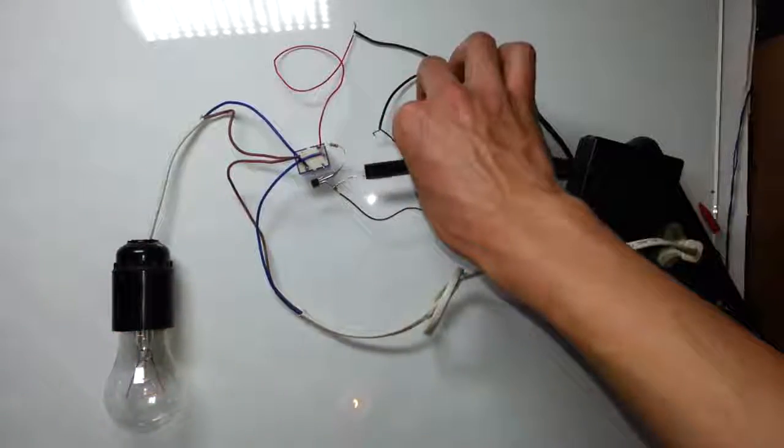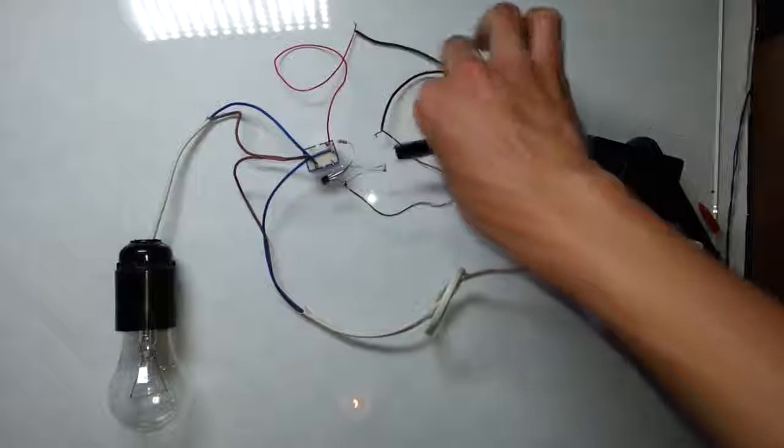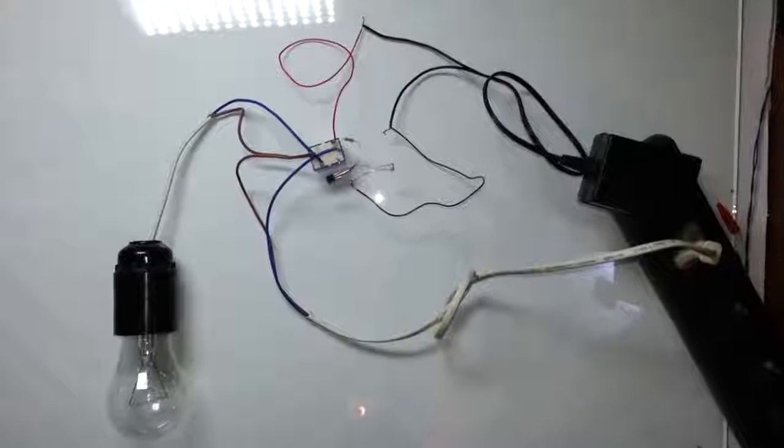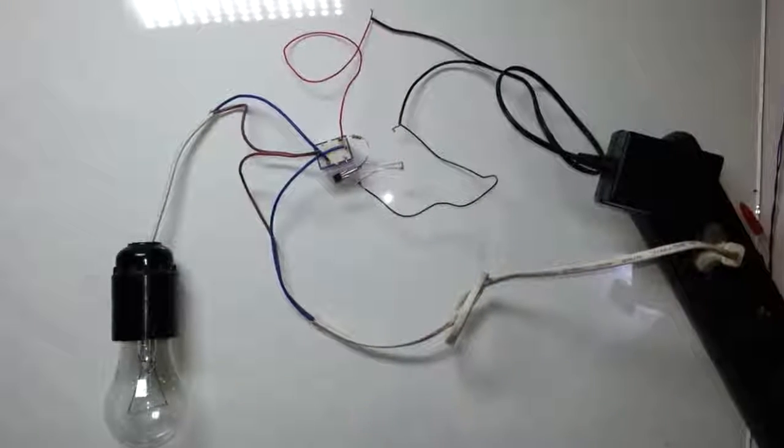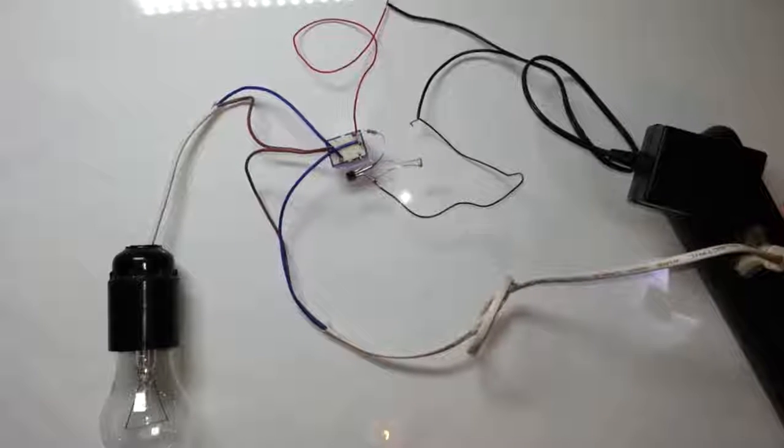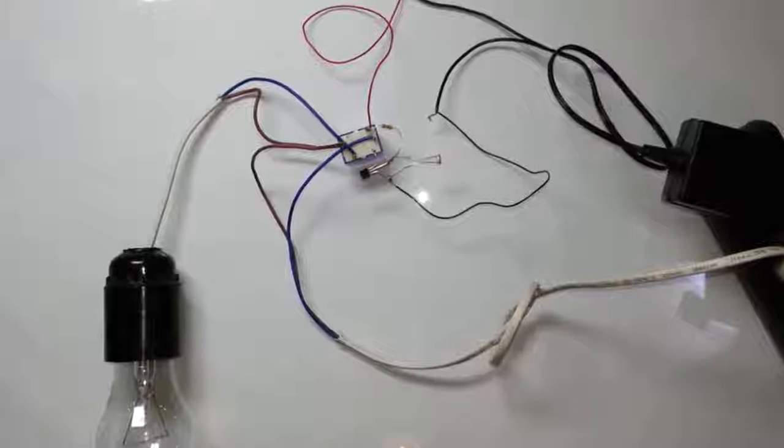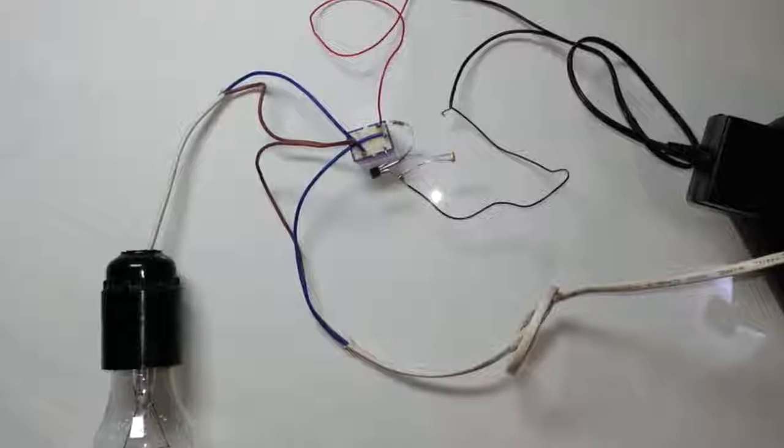And when I cover the sensor, at some point it became too dark and the light bulb is turning on. But when the bulb is on, there is too much light, so sensor turns the bulb off. And when the bulb is off, it became too dark again. So sensor turns on the light bulb again. And this cycle repeats again and again.